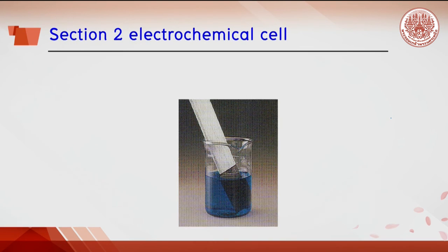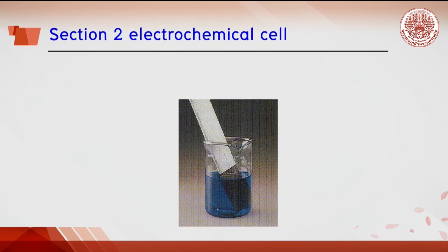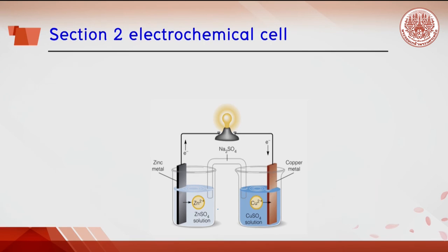In the experiment of Section 1, the transferring of electrons between zinc strip and copper ion is not visible because both zinc and copper ion are in direct contact in the same container. In order to observe the transferring of electrons, two half cells are separated. In the half cell on the left, called the zinc half cell, a zinc strip is immersed in zinc solution.